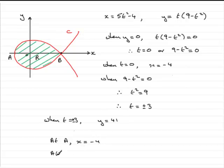And at B, x equals 41. So we've got at A then, x is minus 4, and at B, x is 41. So that brings us to the end of this part of the question.